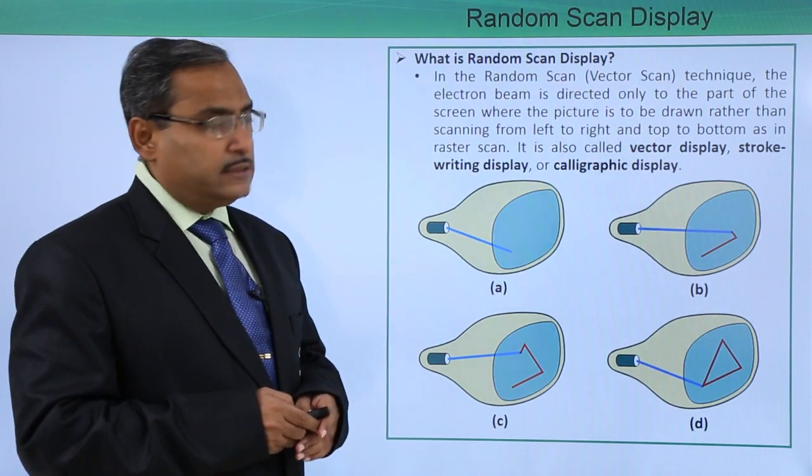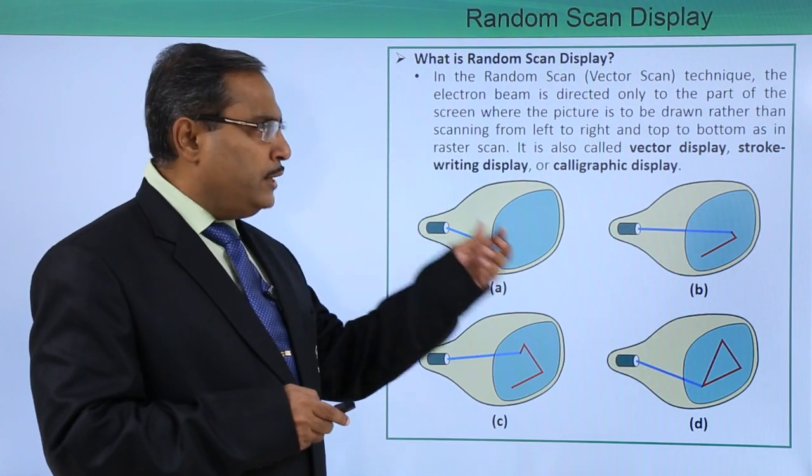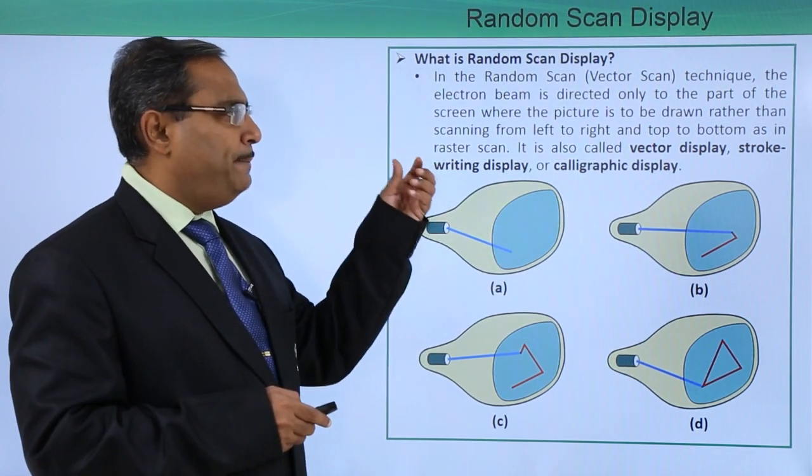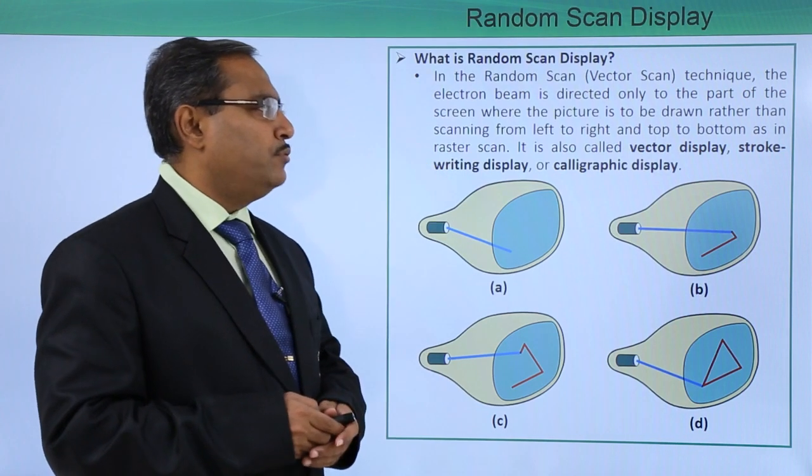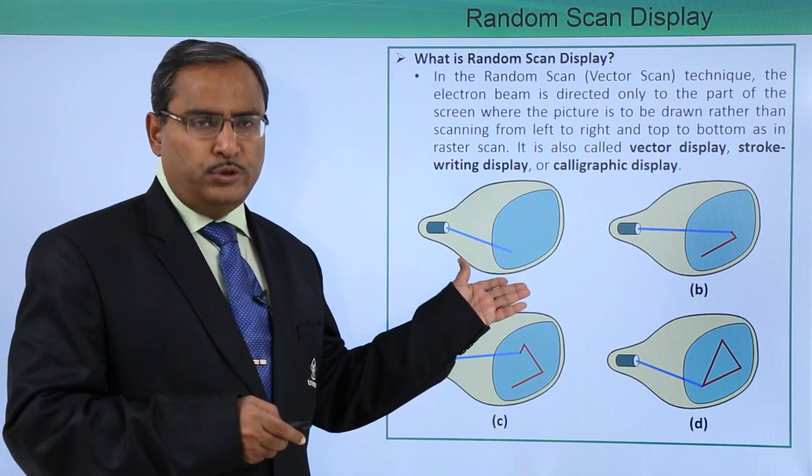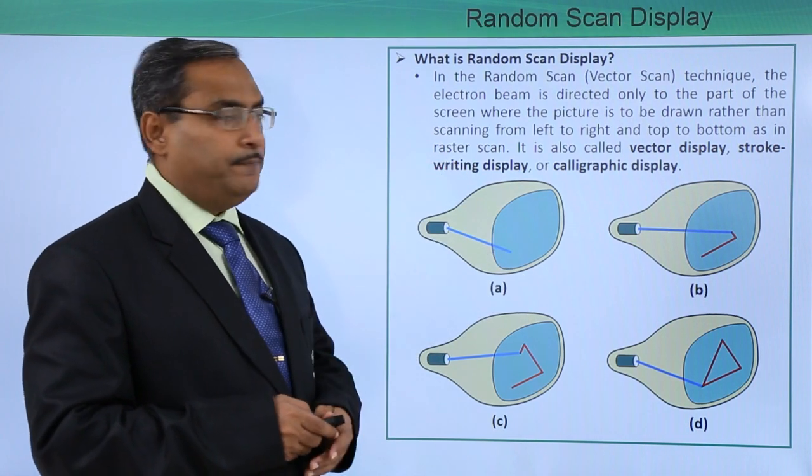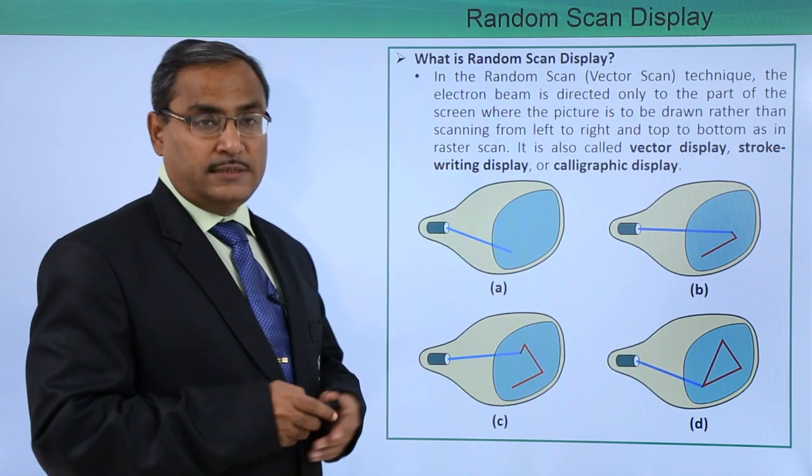In the random scan, that is the vector scan technique, the electron beam is directed only to that part of the screen where the picture is to be drawn rather than scanning from left to right, top to bottom of the whole screen which you did in raster scan. That is the basic difference between this vector scan and raster scan.